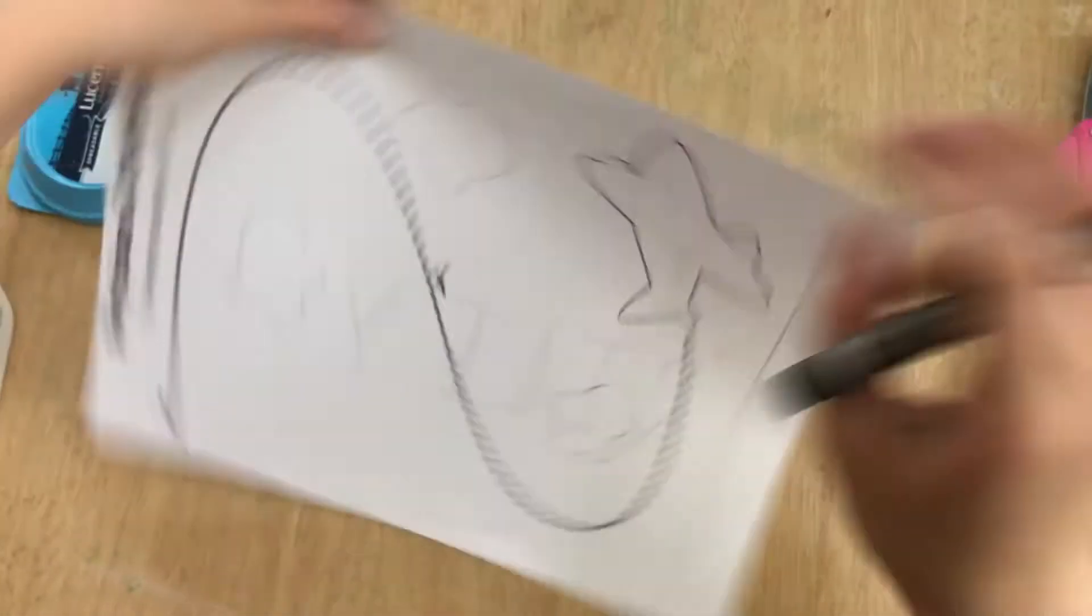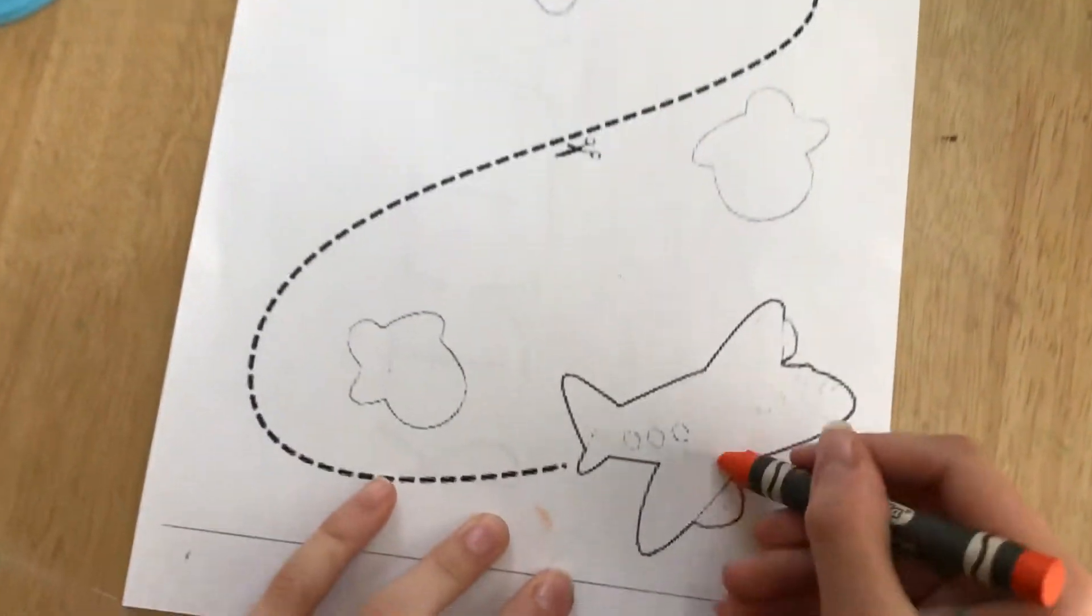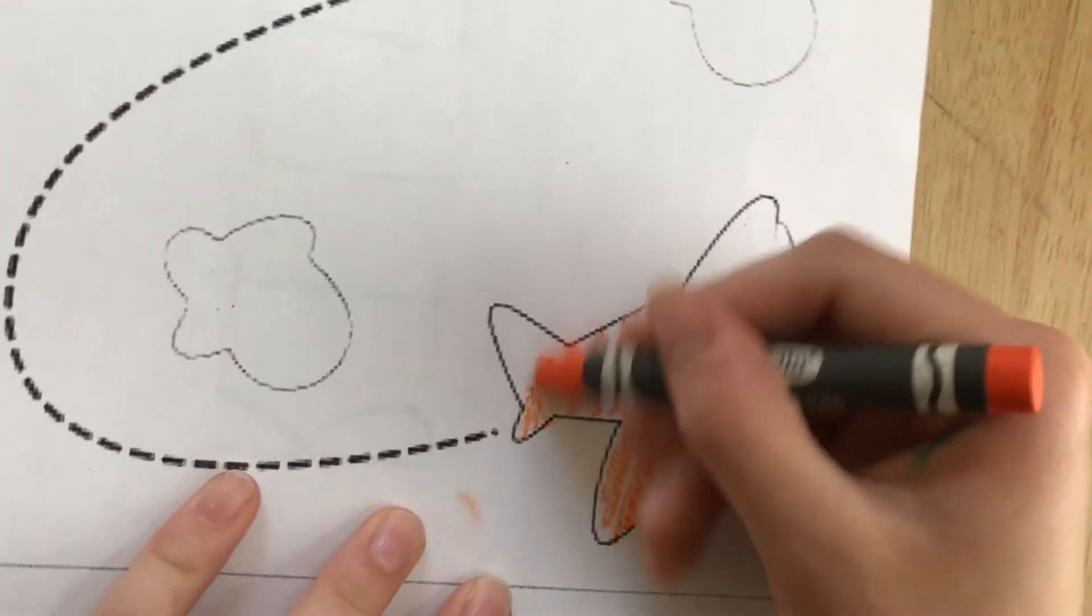Good job! Now let's flip it over and let's start. I'm going to start by coloring. I'm going to color my airplane orange. You can color your airplane whatever color you want.